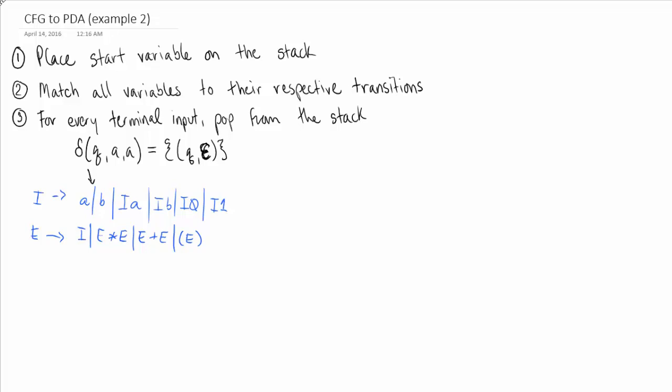Let's do step one here. Alright, so we're replacing the start variable on the stack. Our start variable in this case would just be I. So again, we only ever have one state.